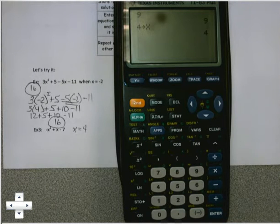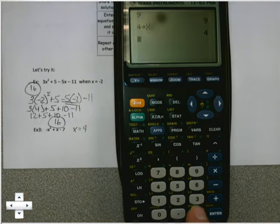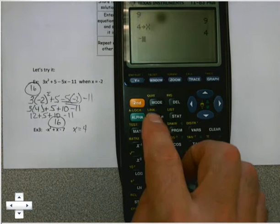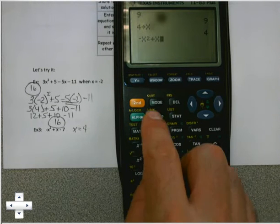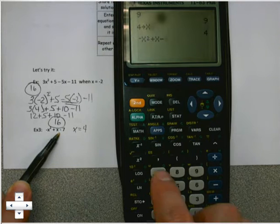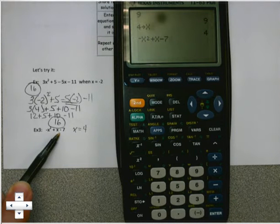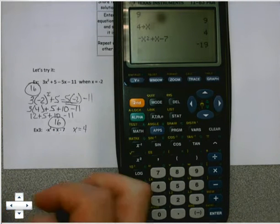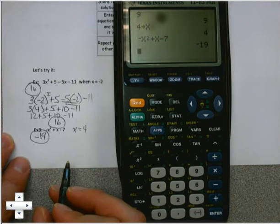Make sure you hit enter to get your negative 4 in there. And then again, you just type in what you see. So I see a negative, and again, the white button, x squared plus x minus, different from negative, 7. Go ahead. We hit that now. We're told it's negative 19.